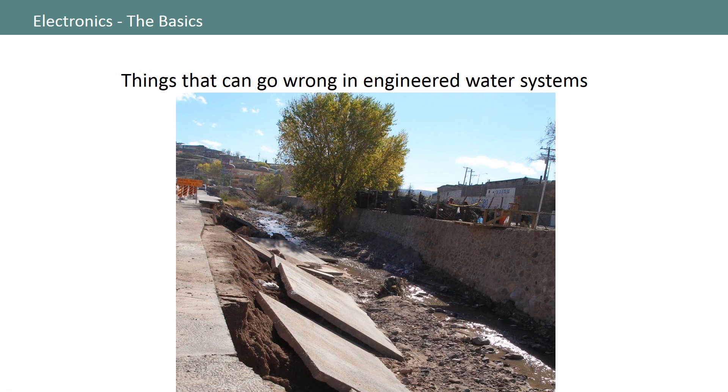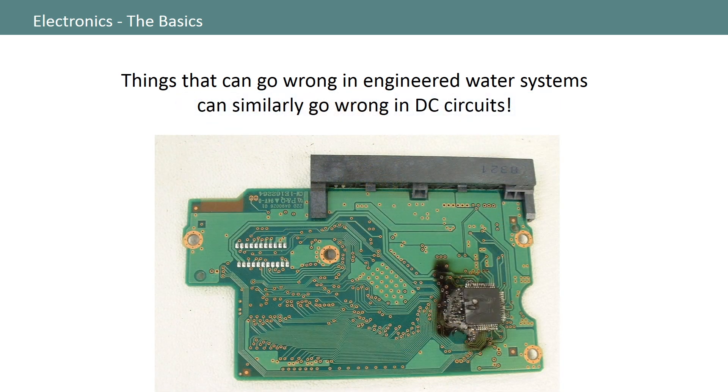Now that we have this conceptual model mapped out, let's see if we can find some other real world analogies. Here, we can see that things that can go wrong in engineered water systems, resulting from too much water flow, or current, can similarly happen in electrical systems.